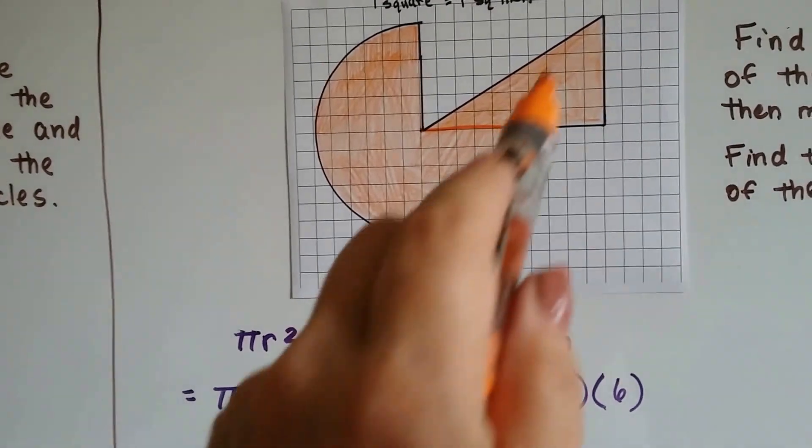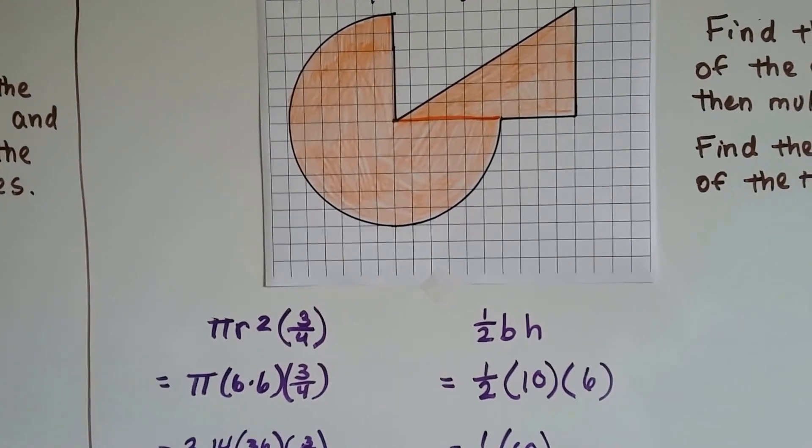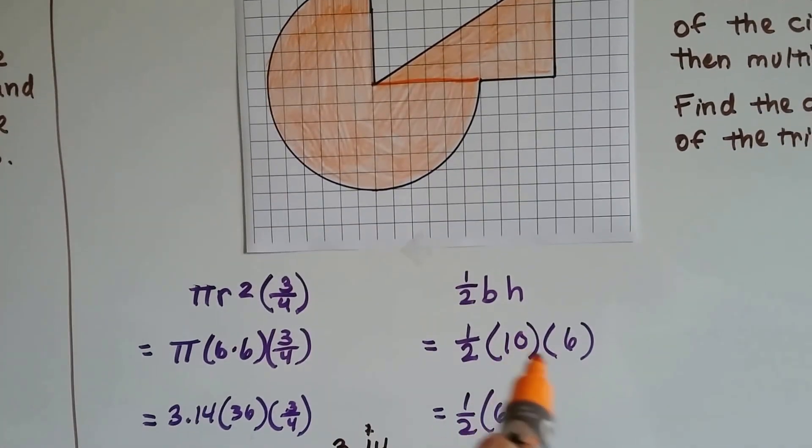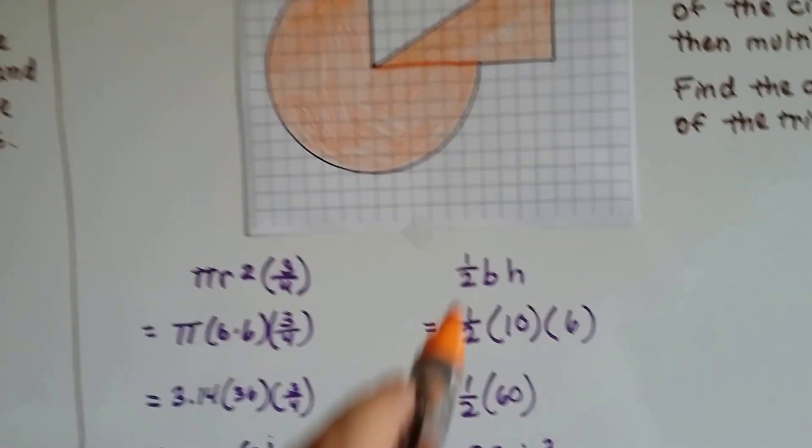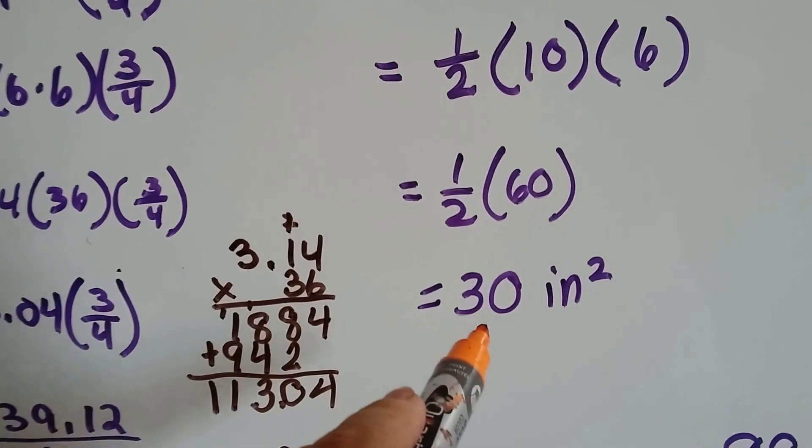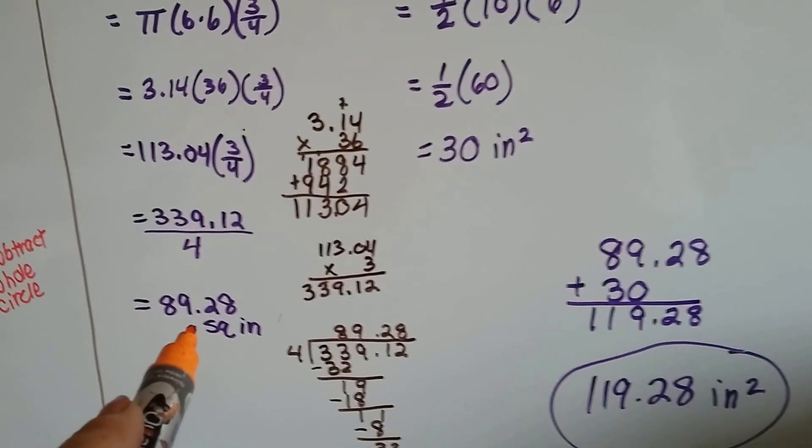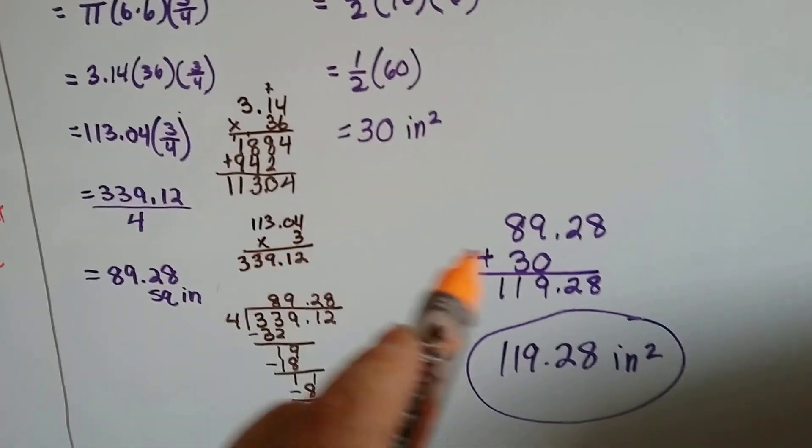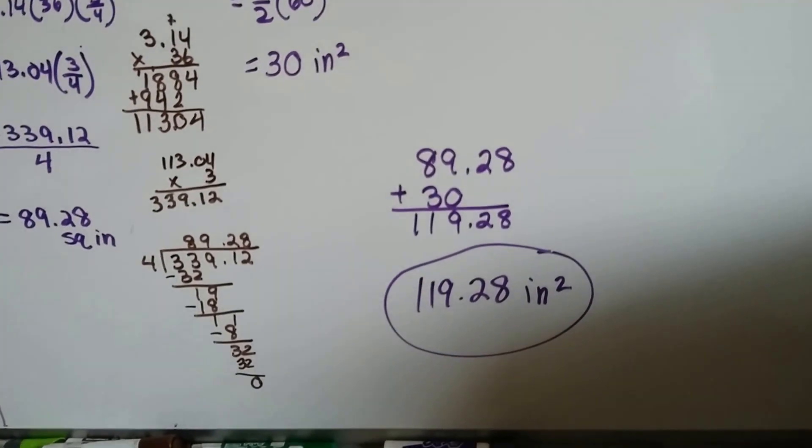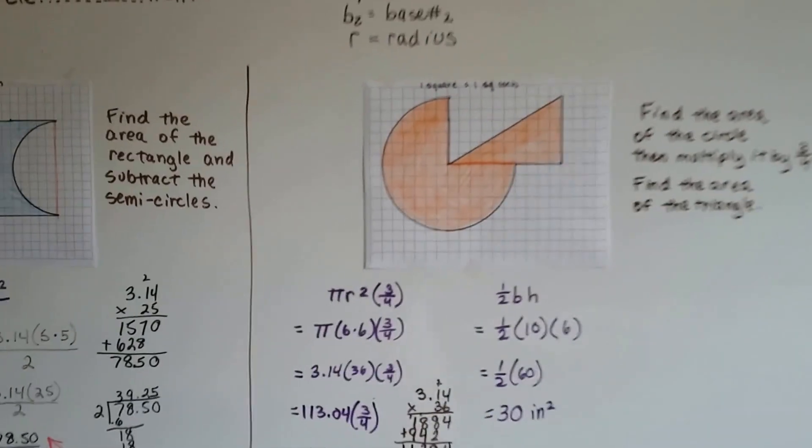Now we have to do the triangle. The triangle is half base height and this is a 10 and that's a 6. We multiply 10 times 6 and get 60 and now we need half of it. Half of 60 is 30 so we have 30 square inches. We add the 89.28 square inches to the 30 and we get 119.28 inches squared. That's the total area for that weird shape.